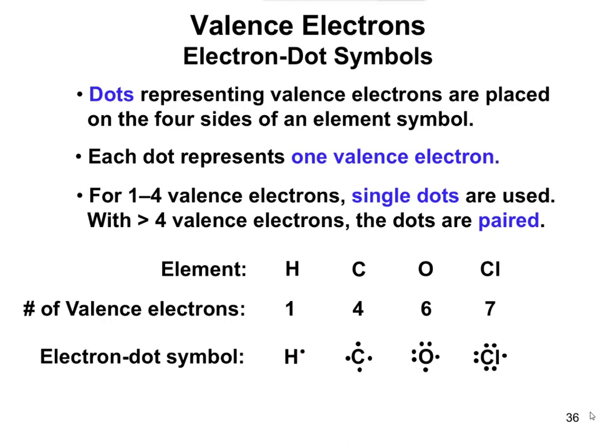Now, it doesn't matter where you have that dot. Hydrogen can look like that with a dot above it, to the left of it, or below it. Those are all acceptable electron dot symbols for hydrogen.